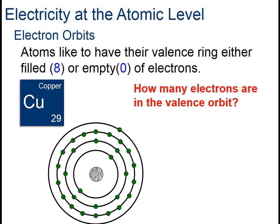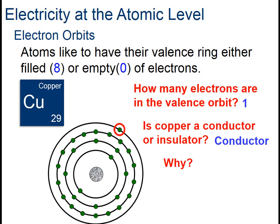The copper example shown here has one electron in the valence shell, making it an excellent conductor of electricity.